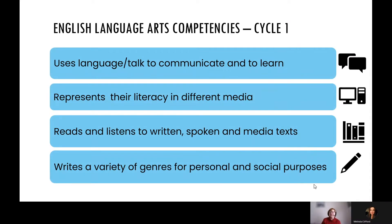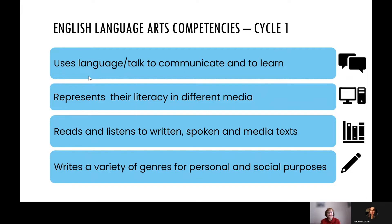There are two programs for secondary ELA, one for each cycle. In our Cycle 1 program, we have four competencies — four areas of learning. The four competencies in the Cycle 1 secondary program are: using language to communicate and to learn (the talk competency), representing literacy in different media, reading and listening to written, spoken, and media texts, and writing a variety of genres for personal and social purposes.